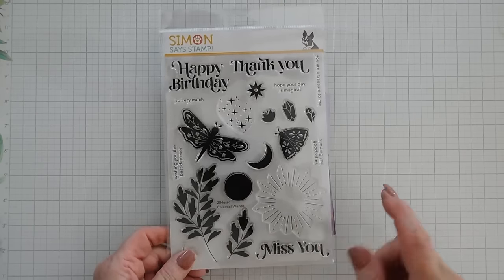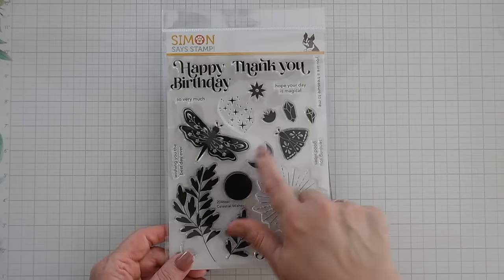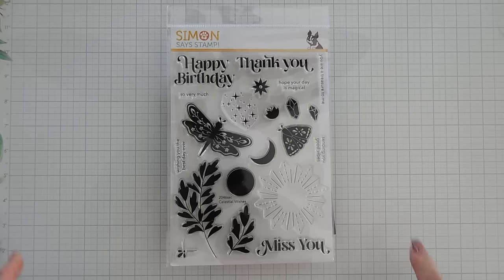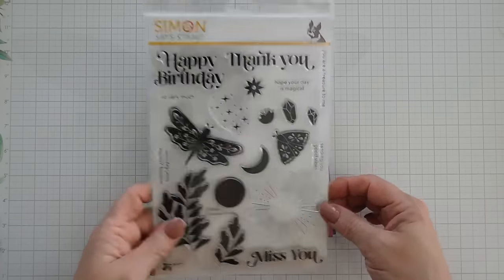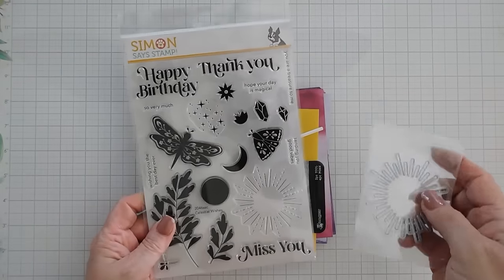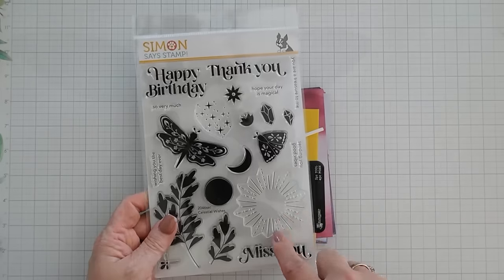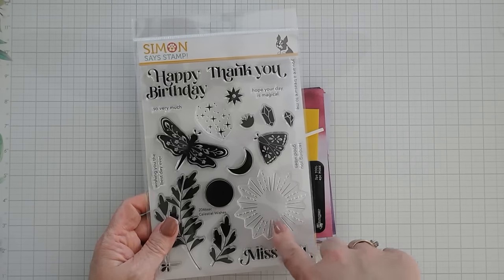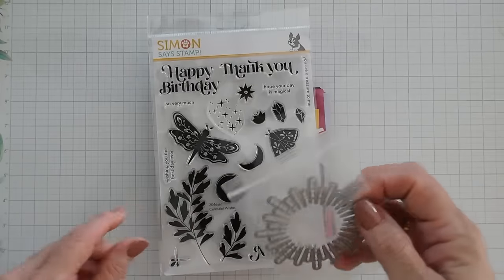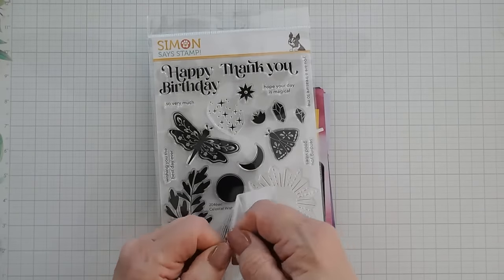I do want to mention that they have a coordinating die set that will die cut out all of the images in here and I always link it down below in case you guys are interested. I also linked the bundle of the stamp set and the die set too. And speaking of the die set I do want to mention that this die coordinates with this sunshine here. I like this because this is actually really pretty on its own. I'm going to die cut it out and show you what it looks like.